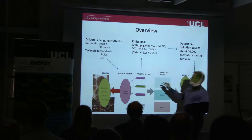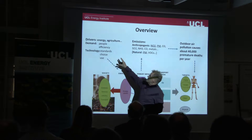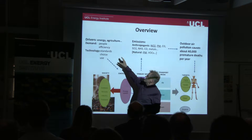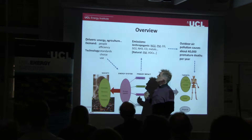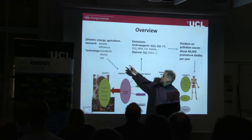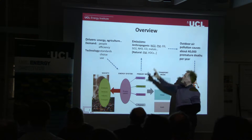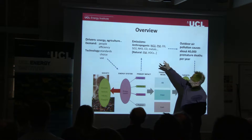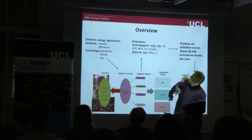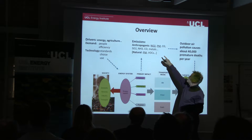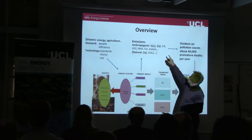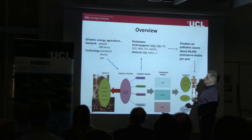This kind of process we've been looking at is the drivers for energy and agriculture, to a lesser extent, in terms of people and the efficiency of demand, and technology standards of choice and use. Those drivers and technologies and fuels determine your emissions. Here we're looking at anthropogenic emissions of nitrogen dioxide and particulate matter, not looking at ozone, sulfur, ammonia, carbon dioxide, metals, and so forth.